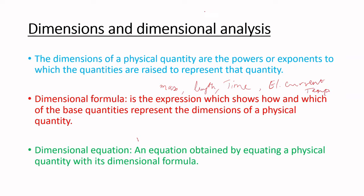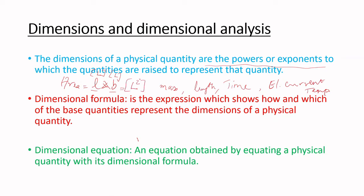The dimensions of a physical quantity are the powers or exponents to which the quantities are raised to represent that quantity. For example, area means length into breadth. Both are measured as distance, so length has dimension L and breadth also has dimension L. So area's dimensional formula is L squared, and that power 2 is called the dimension.